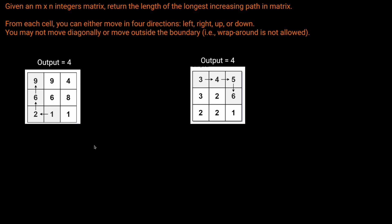Looking at this example matrix, our output is going to be four. Starting from the one, we could go to a two, we could go to a six, and we could go to a nine — so that's a total path length of four, and there's no longer increasing path in this matrix.